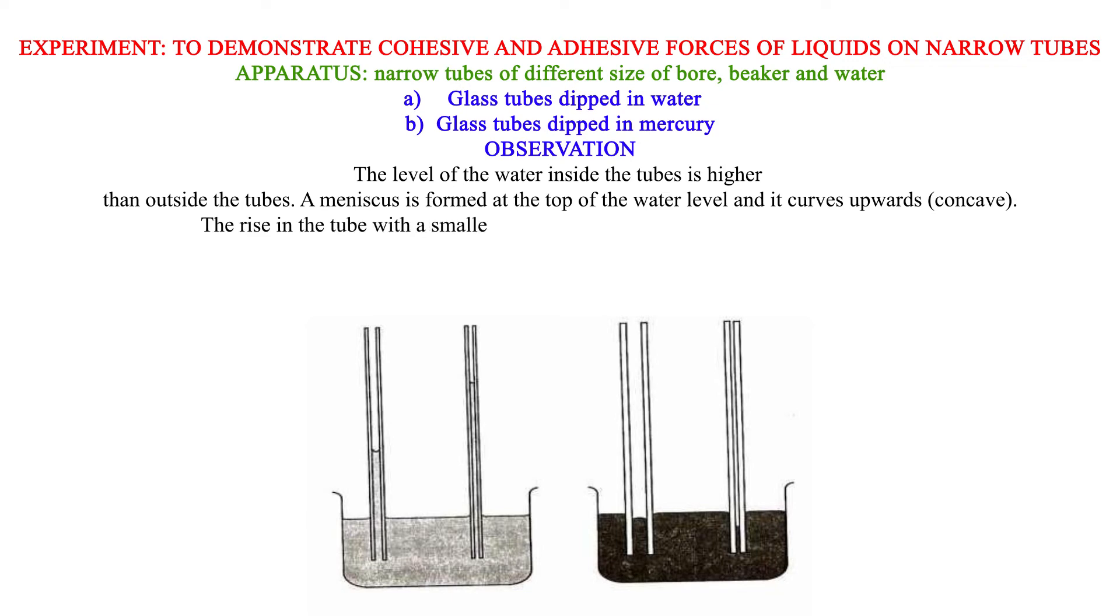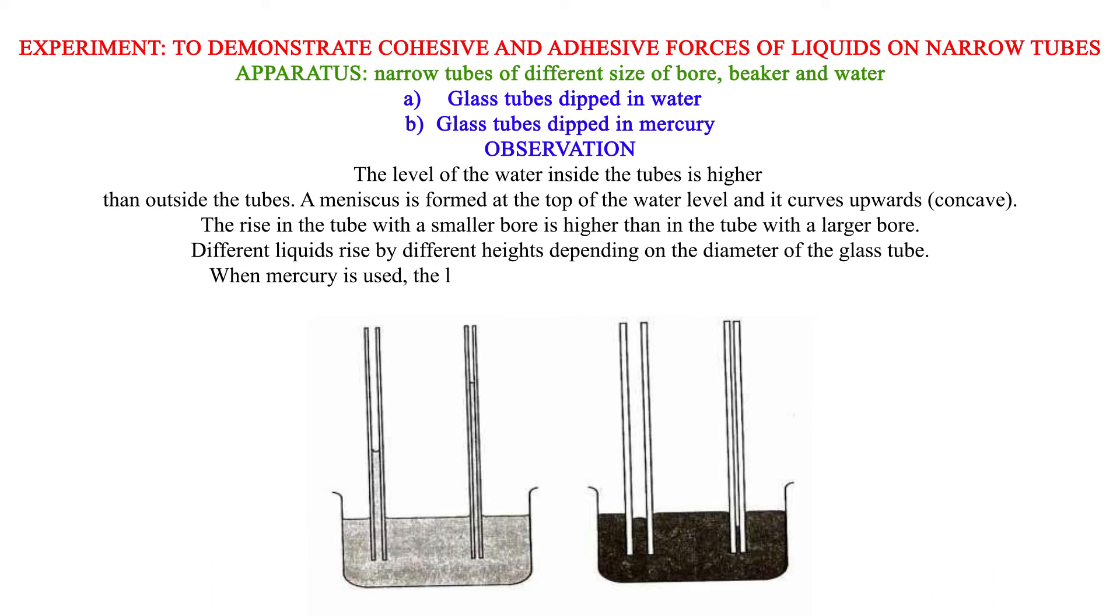The rise in the tube with a smaller bore is higher than in the tube with a larger bore. Different liquids rise by different heights depending on the diameter of the glass tube. When mercury is used, the level of mercury inside the tubes goes lower than that outside the tubes. The surface of the mercury will curve downwards (convex).